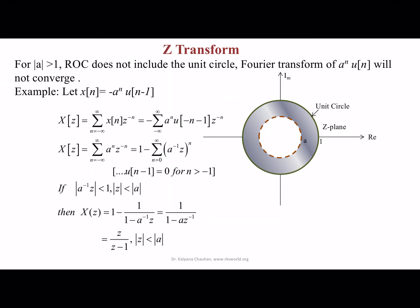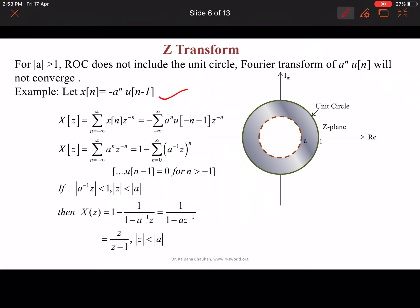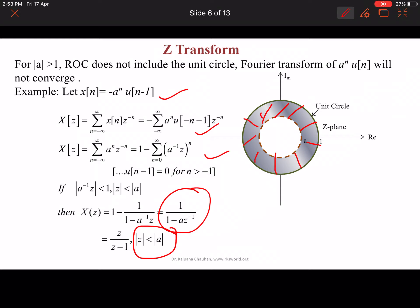Now let us consider another X(n) and find its Z-transform. We finally get the Z-transform in a certain form. In this case, we have |Z| less than |A|, so the region of convergence is inside the circle of radius A. This means Z is less than A here, and the ROC does not cover the unit circle.